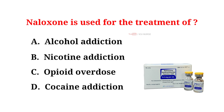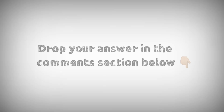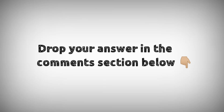Naloxone is used for the treatment of: A. Alcohol addiction. B. Nicotine addiction. C. Opioid overdose. D. Cocaine addiction. The correct answer is C — opioid overdose. Drop your answers in the comment section below.